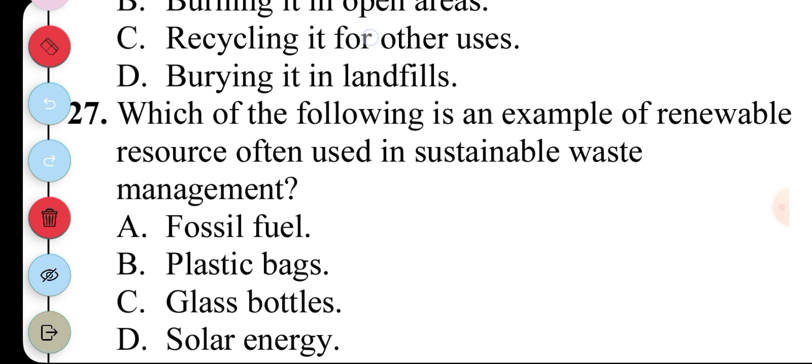Question 27. Which of the following is not an example of a renewable resource often used in sustainable waste management? A. Fossil fuel, B. Plastic bags, C. Glass bottles, D. Solar energy. The answer to question 27 should actually be D, because all of these can be used.